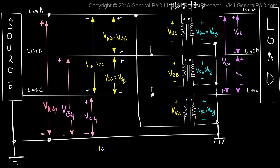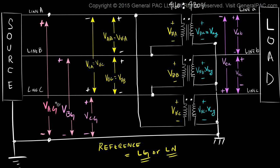In general terms, this reference quantity is always defined as a line-to-ground quantity or a line-to-neutral quantity. On the high voltage side — which is the delta side — VAG, VBG, and VCG are our reference quantities. For the sake of simplicity, we use VAG as our reference quantity on the high voltage side.